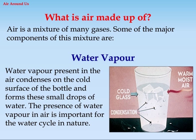1. Water vapor. Water vapor present in the air condenses on the cold surface of the bottle and forms small drops of water. The presence of water vapor in air is important for the water cycle in nature.